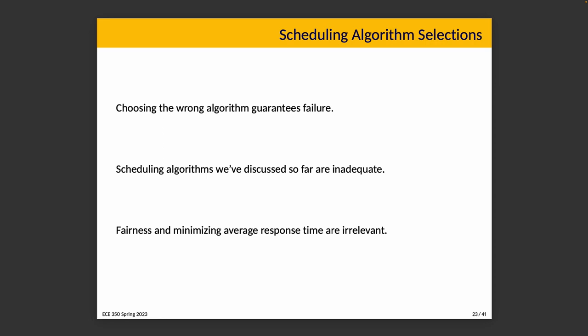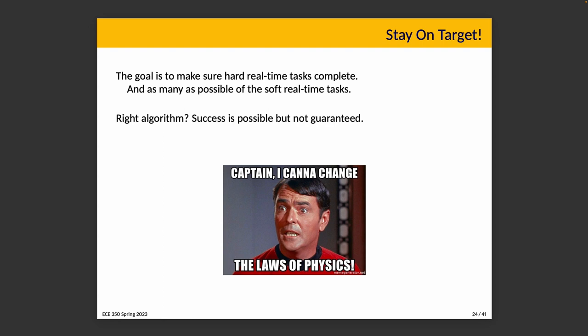If the right conditions are present, success is possible but not guaranteed. Even an optimal scheduling algorithm cannot make a 120-second task complete in 90 seconds, nor find a way to complete 400 tasks per day when the system has maximum throughput of 350. There are no miracles — the CPU we have is the CPU we have — but with the right algorithm and achievable goals, we should succeed.